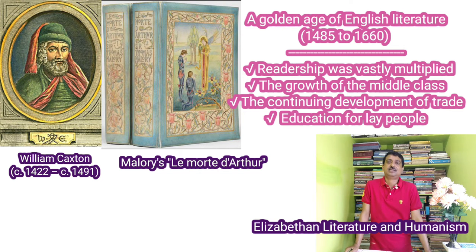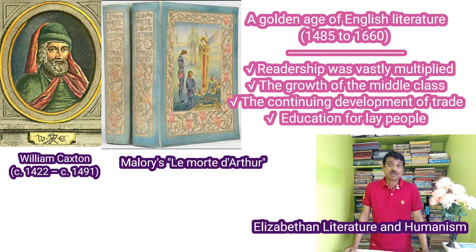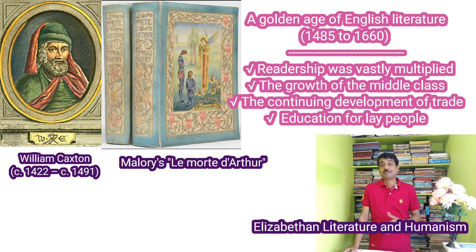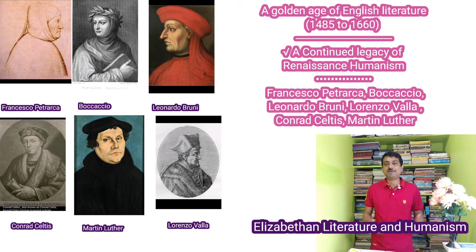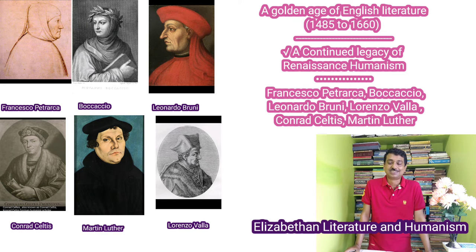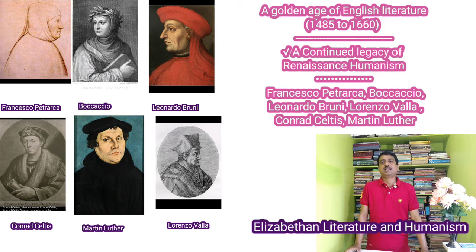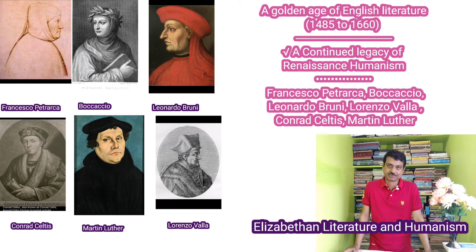A golden age of English literature commenced in 1485 and lasted until 1660. Malory's Morte d'Arthur was among the first works to be printed by William Caxton. From that time on, readership vastly multiplied. The growth of the middle class, the continuing development of trade, the thoroughness of education for lay people, and the widening horizons of exploration gave a fundamental new impetus and direction to literature, and a new type of literature connected with life was born.